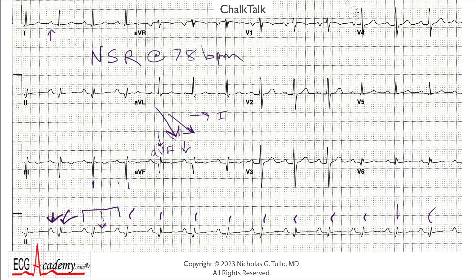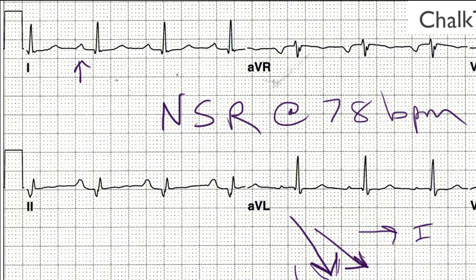Now let's look at some intervals, zooming in a little bit. This first P wave starts on a heavy line, and the QRS complex starts just past the next heavy line. The heavy lines are 200 milliseconds apart, so the PR interval is about 210 milliseconds. That allows us to make a diagnosis of first-degree AV block — granted, it's borderline, and some people would not notice it, but for the sake of being complete, we can make that diagnosis.